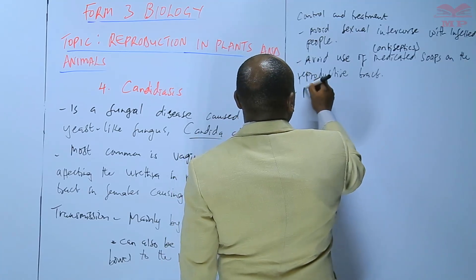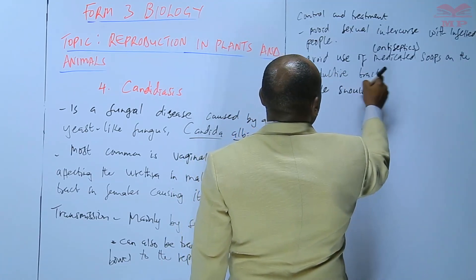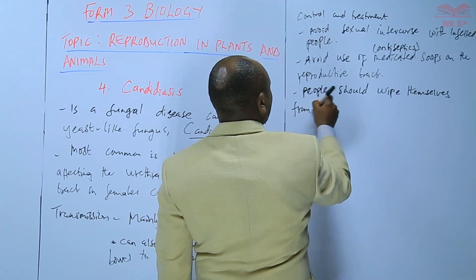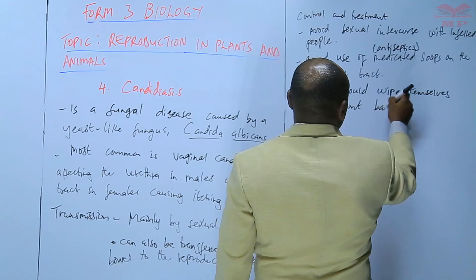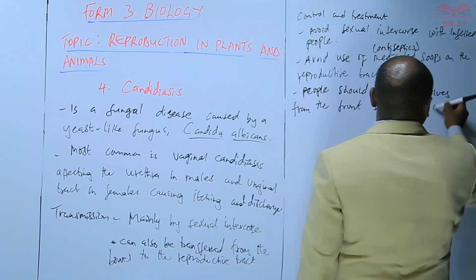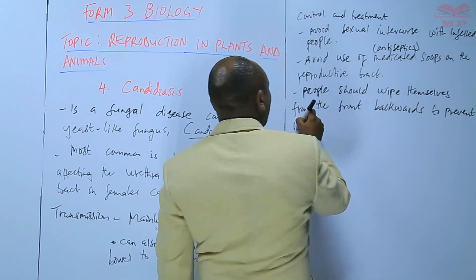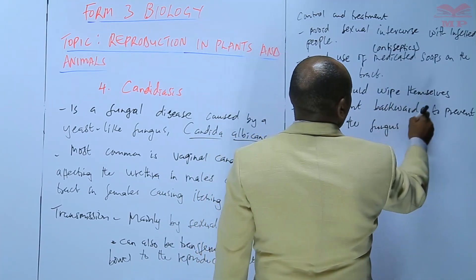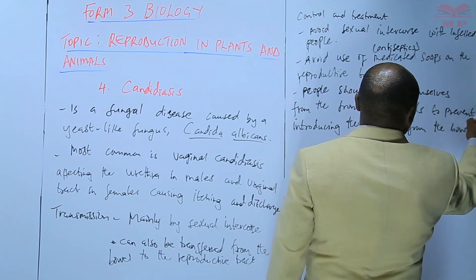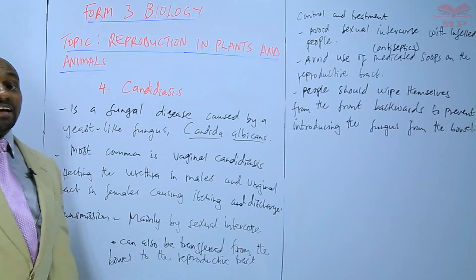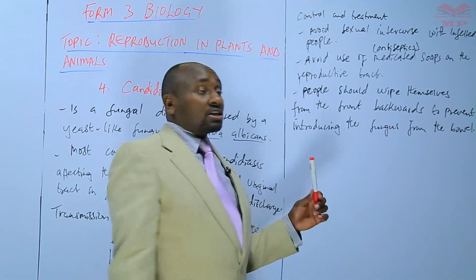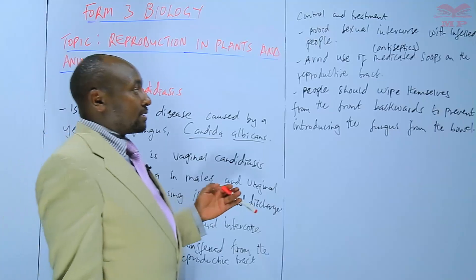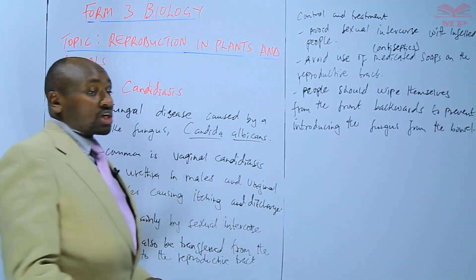Also, people should wipe themselves from the front backwards to prevent introducing the fungus from the bowel. The fungus can sometimes be found within the digestive system, so if a person wipes from the back to the front after visiting the washroom, it may end up getting into the reproductive system. That is another control measure that should be taken.